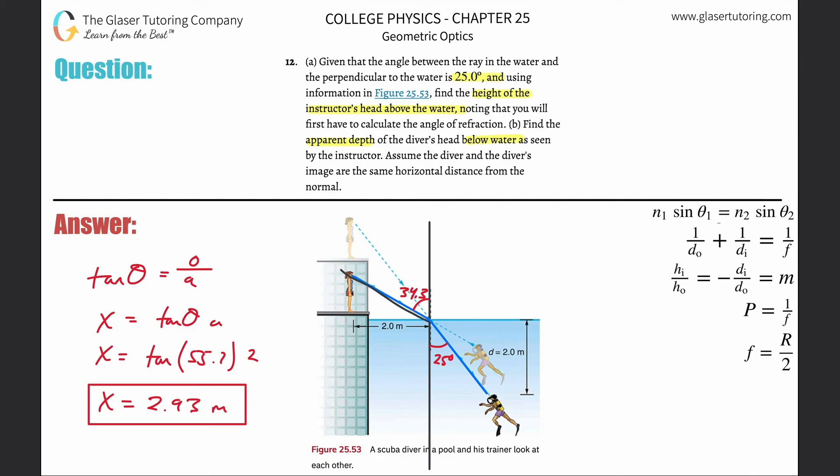This instructor is seeing light coming from the diver that has this angle to it. Now the instructor does not know that the angle here is bending. All the instructor knows is that whatever light she's seeing is coming from like this angle. So the instructor actually perceives the diver to be here instead of here. So the depth is different, right?